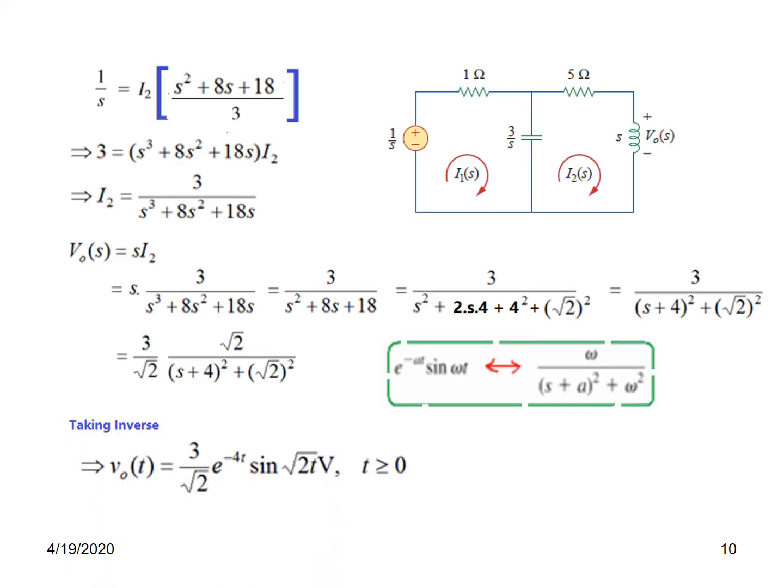Taking inverse Laplace, V0(s) will become V0(t). 3 by square root 2, and just following the formula, e raised to the power minus At. E raised to the power minus 4t, sine square root 2t, because sine omega t. Omega is square root 2. This is the answer, voltage for t greater than 0. So this is the final answer. I hope you have learned something and you can follow this technique to solve other problems. Thank you.